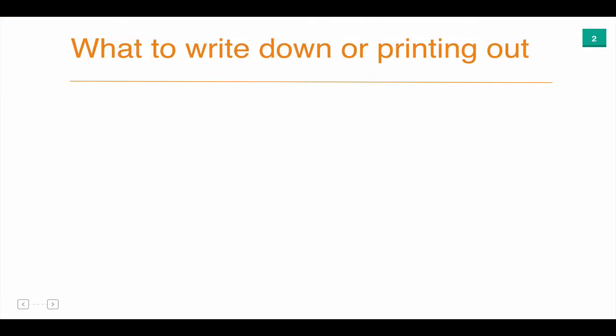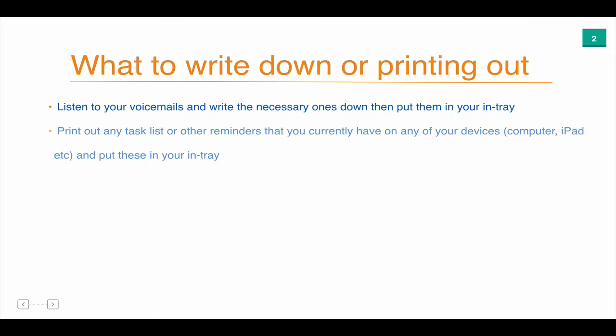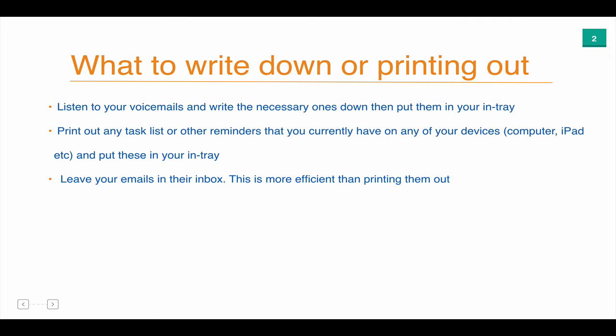Now what you need to do is gather any current to-do lists, voicemails, texts and emails and add these to your inventory of in-items. The first step is to listen to your voicemails, write down the necessary ones, and put them into your in-tray.